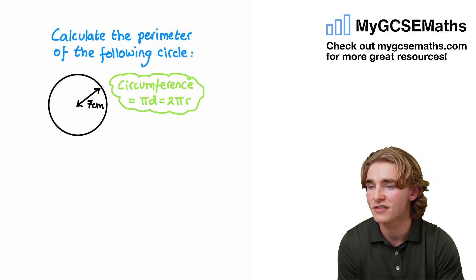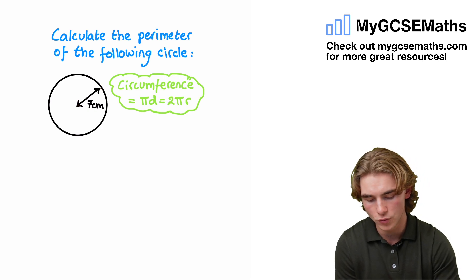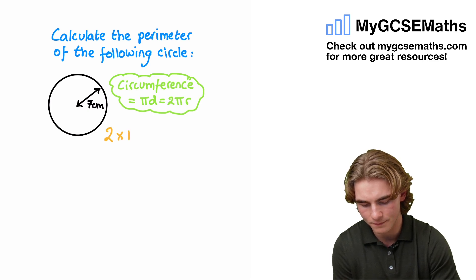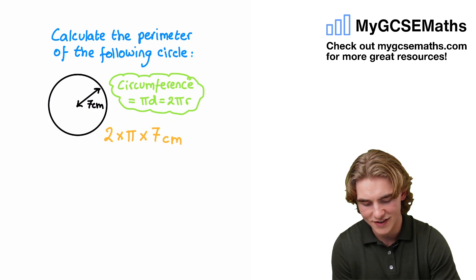In this case, we've been given the radius, we've been given the length from the center of the circle to the edge of the circle, so we're going to use 2πr. We're going to do 2 times by π times by our radius of 7. The units for this, guys, it's the perimeter, and we have our length here in centimeters, so it's going to be 2 times π times 7 centimeters.